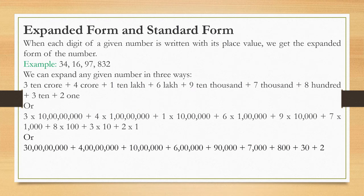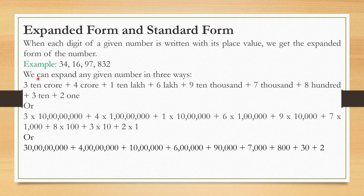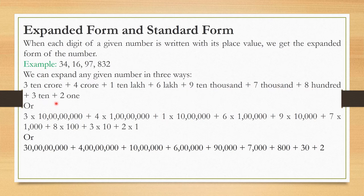Expanded Form and Standard Form: When each digit of a given number is written with its place value, we get the expanded form. For example, 34,16,97,832. We can expand any number in three ways. The first way is to write in words: 3 ten-crores plus 4 crores plus 1 ten-lakh plus 6 lakhs plus 9 ten-thousands plus 7,000 plus 800 plus 30 plus 2.